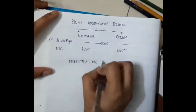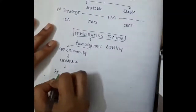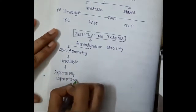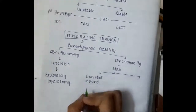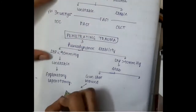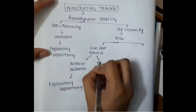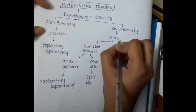For penetrating trauma, management is again based on hemodynamic stability. If systolic BP is less than 90 mmHg (unstable), perform exploratory laparotomy. If stable (systolic BP more than 90 mmHg), management depends on whether it is a gunshot wound or stab wound. For gunshot wound in the anterior abdomen, proceed to exploratory laparotomy. For gunshot wound at other sites, do CECT first; if positive, proceed to exploratory laparotomy.